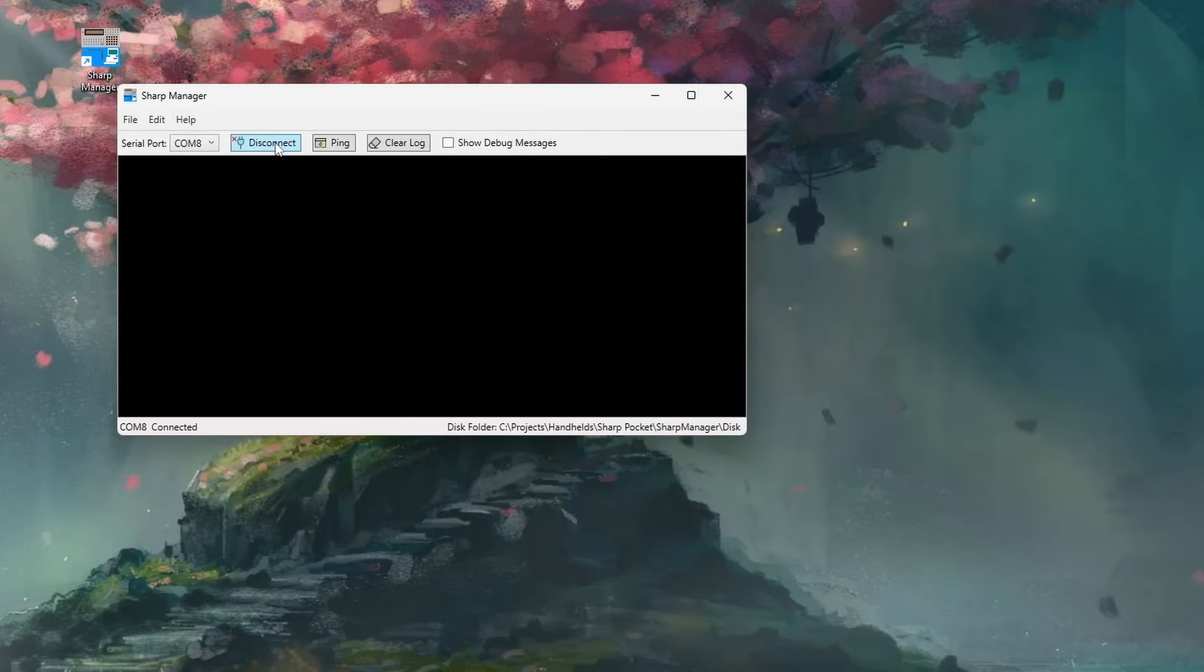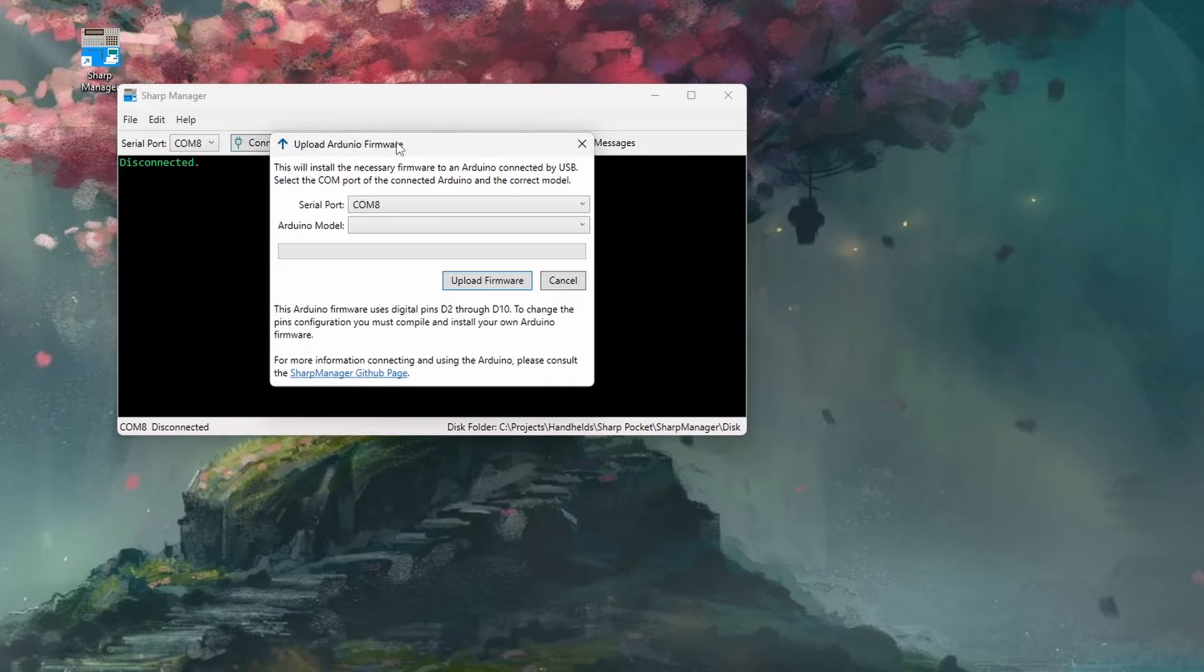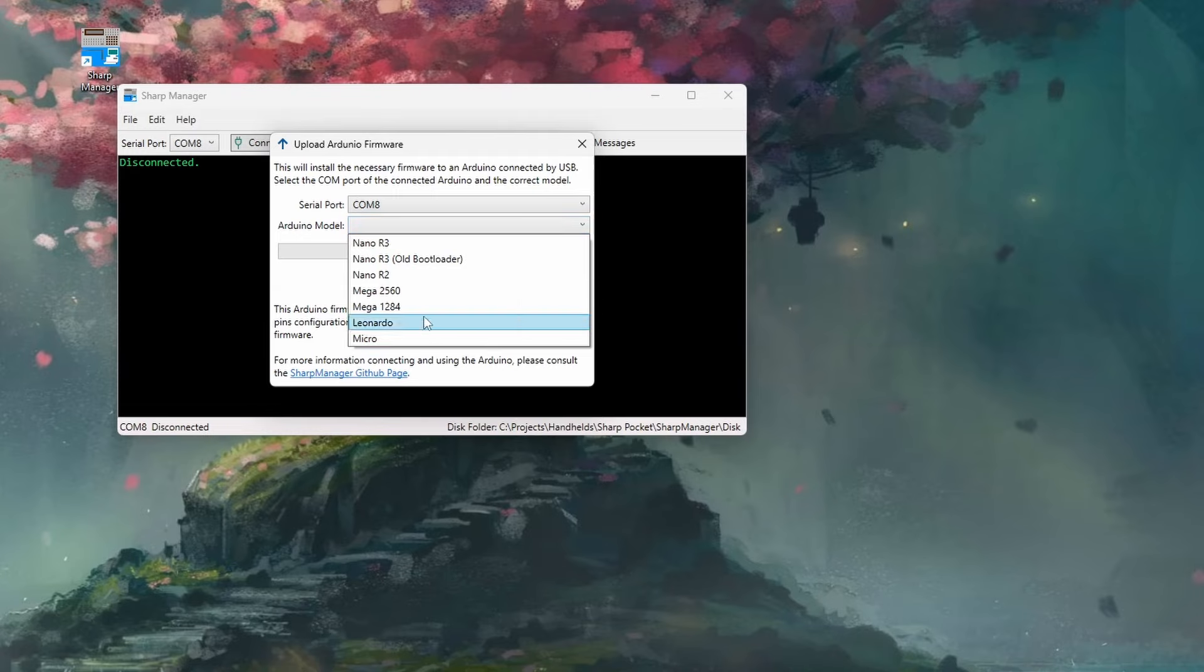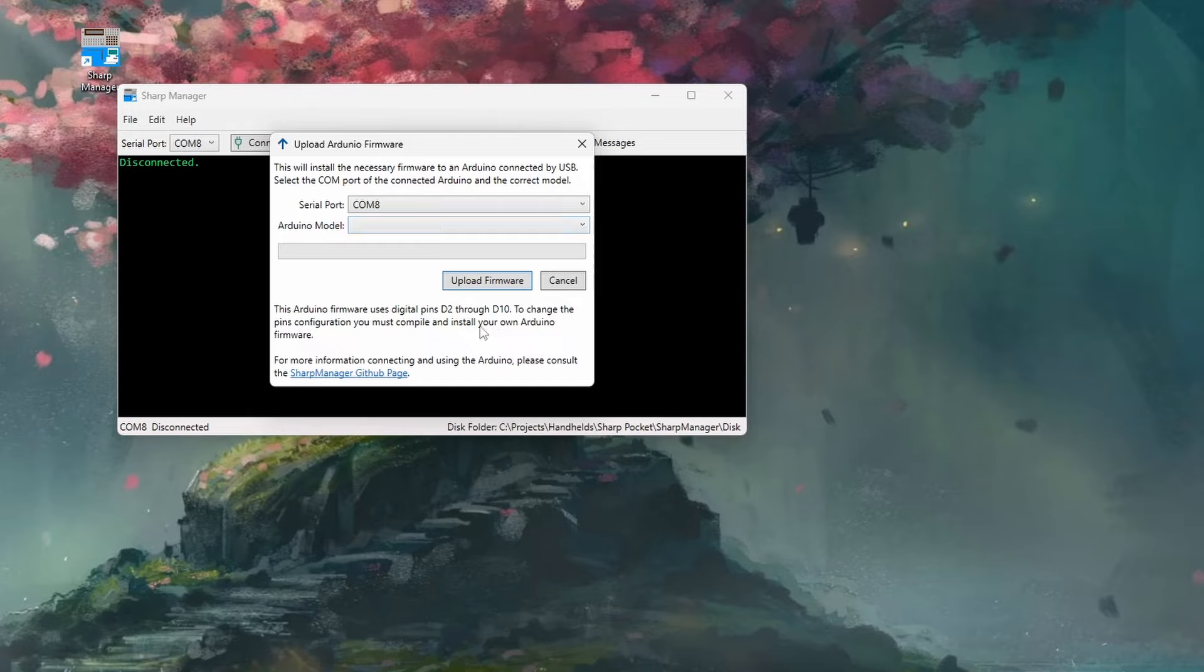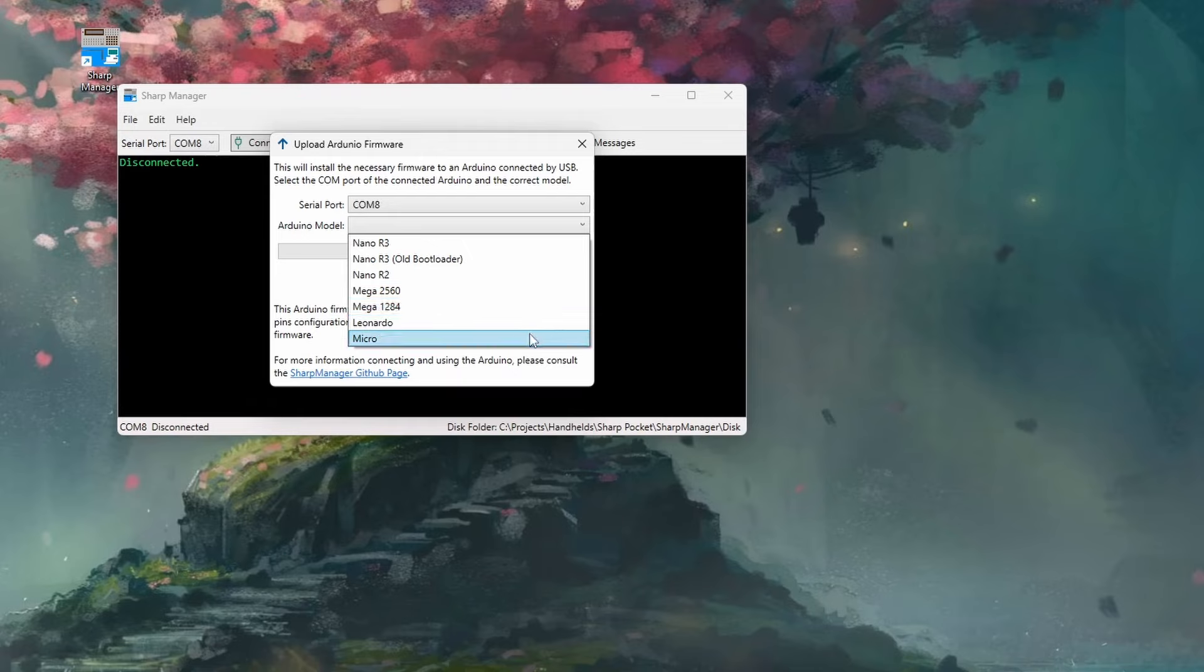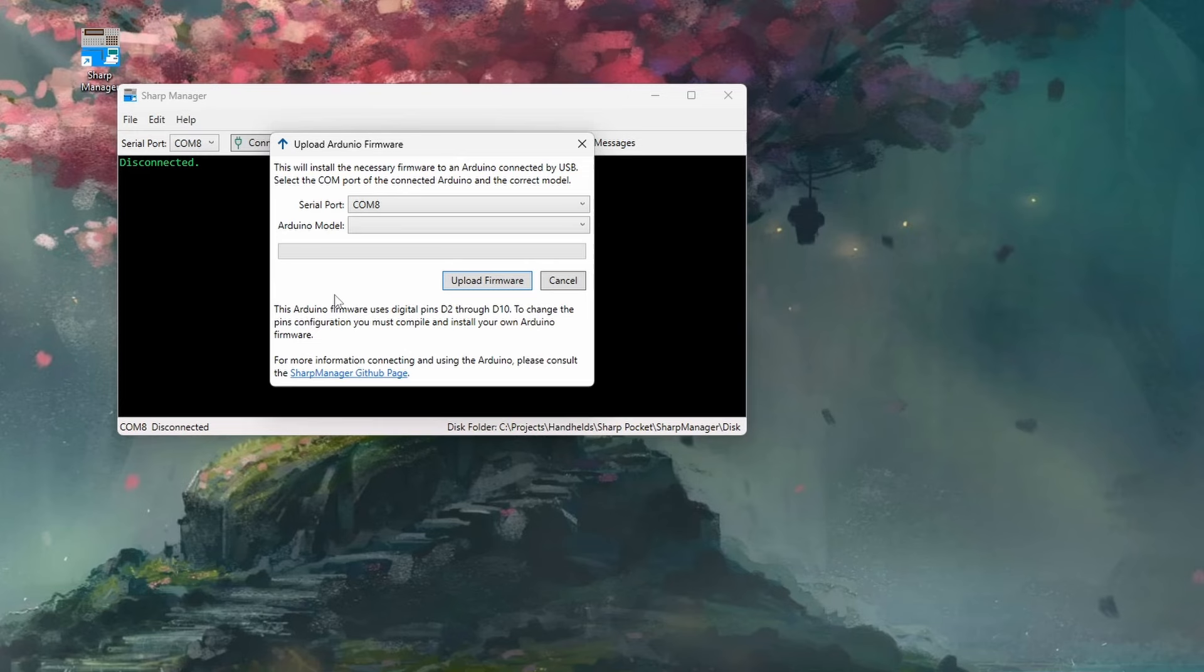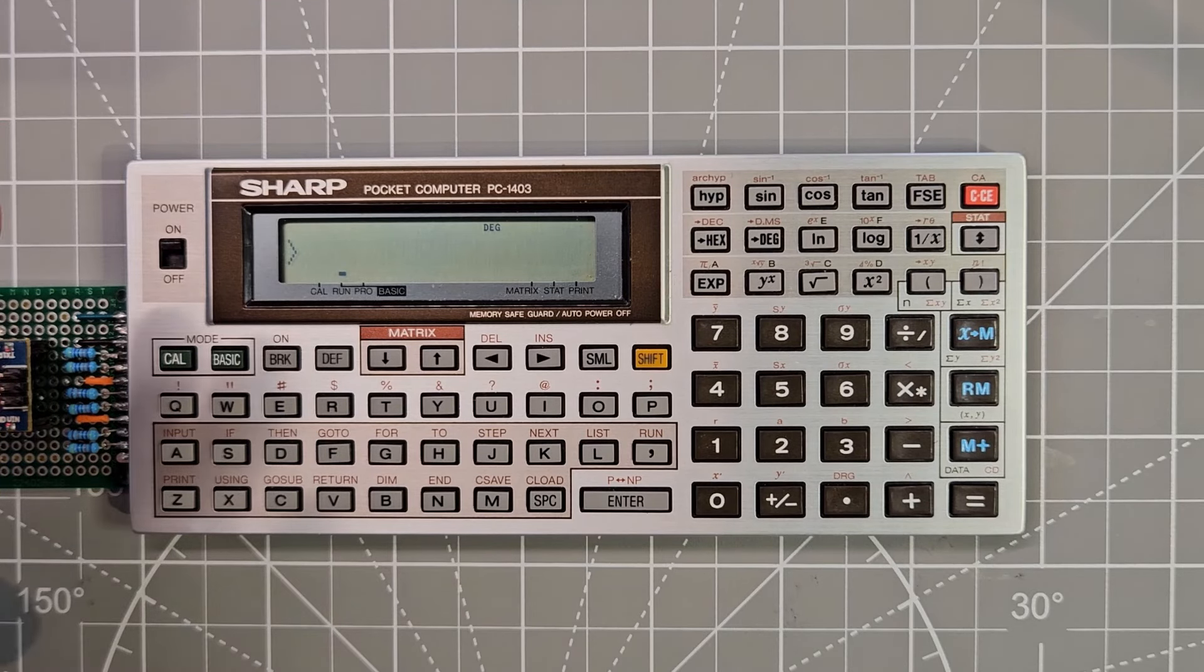If you don't want to compile your own Arduino code, you have the ability to upload Arduino firmware directly to an Arduino. Just pick your model and it will upload the firmware to the Arduino to do this with the pins set up D2 through D10. If you want to change the pins, you'll have to compile your own firmware. It works with or should work with all of these different models of Arduinos. It'll work with any five volt Arduino. You just recompile. It should work just fine.